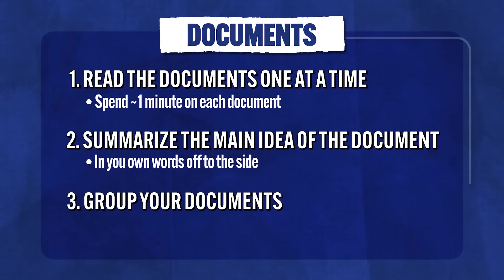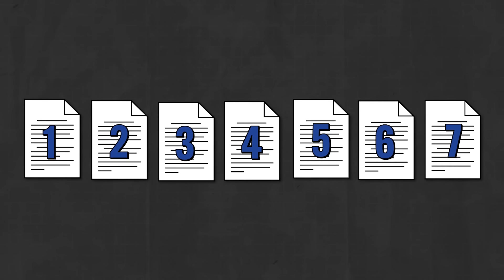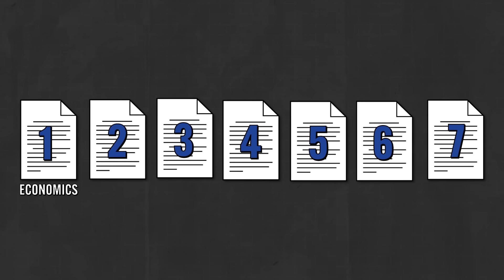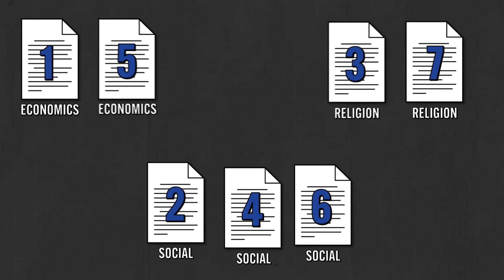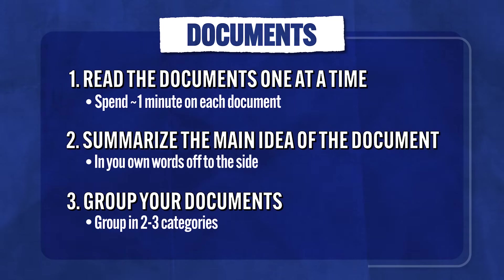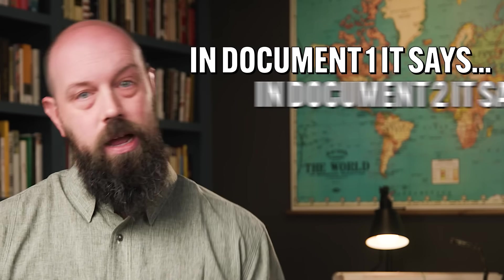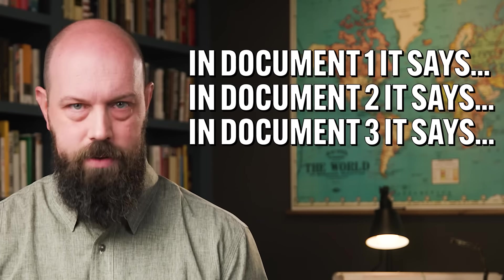Third, group your documents. This isn't required on the rubric, but it's often the difference between a high-scoring and a low-scoring essay. As you're reading through and summarizing, write next to each document what kind it is — economics, religion, social, positive impact, negative impact, and so on. These are your grouping categories, and the rule of thumb is two to three categories. Once you have your categories set up and your documents organized, you now have the beginnings of a thesis and the structure of your essay. Avoid writing an essay that just goes 'document one says, document two says' — that's almost impossible to score highly and signals you don't know how to handle evidence.